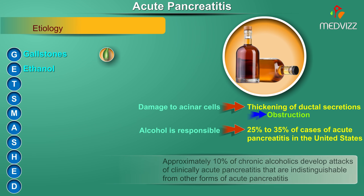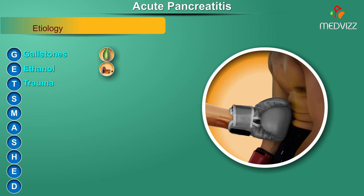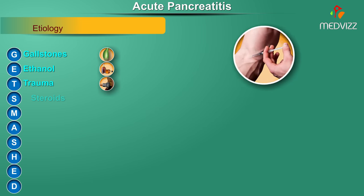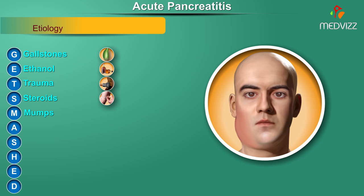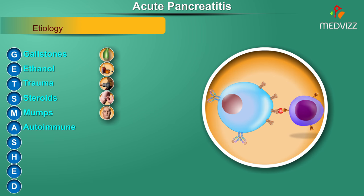Alcohol is responsible for about 25 to 35 percent of cases of acute pancreatitis in the United States. Approximately 10 percent of chronic alcoholics develop attacks of clinically acute pancreatitis indistinguishable from other forms. T stands for trauma — blunt abdominal trauma can cause mechanical damage to the pancreas. S for steroids, M for mumps, A for autoimmune pancreatitis, and S for scorpion sting.